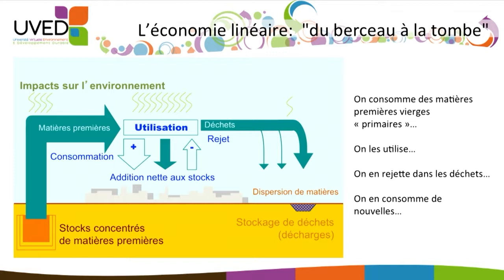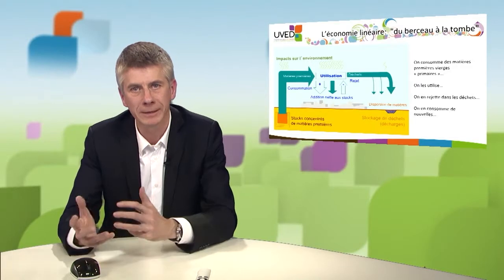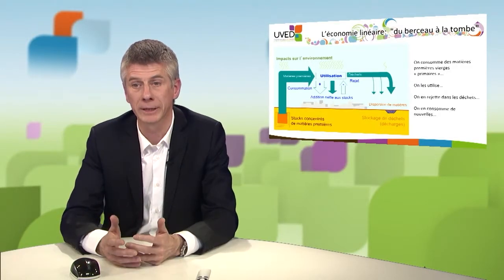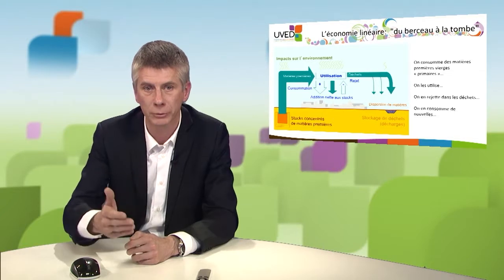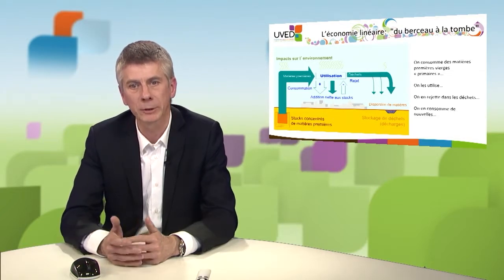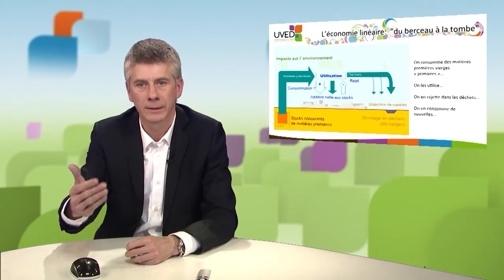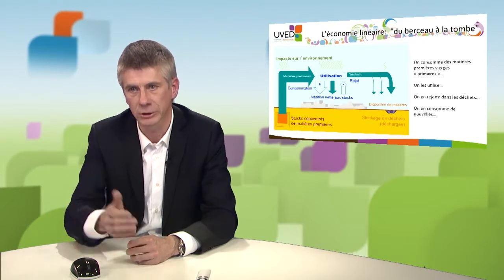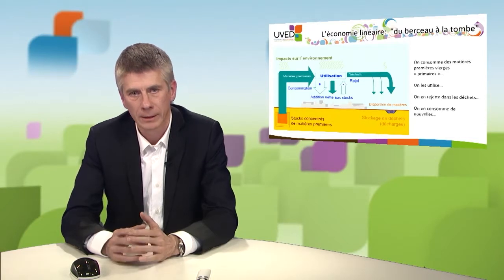But then we get rid of or destroy old goods and we reduce the stocks being used — that's the white arrow going up from the city. The difference between the two arrows is the net addition to stocks: what we add minus what we eliminate. The balance between inputs and outputs means the quantity of raw materials consumed must equal the sum of what's rejected and the net addition to stock.